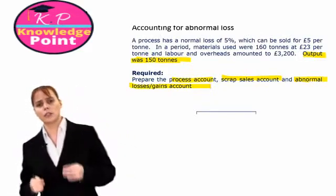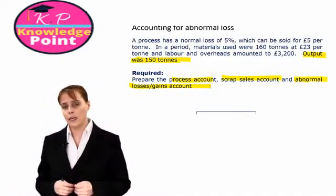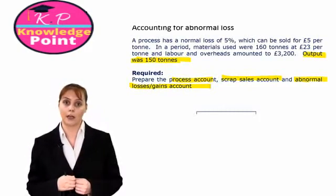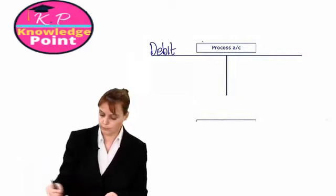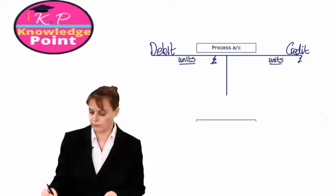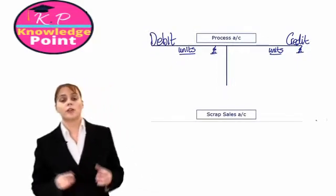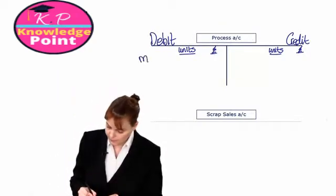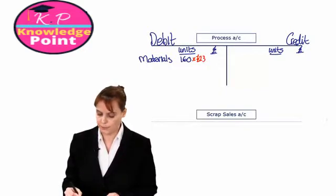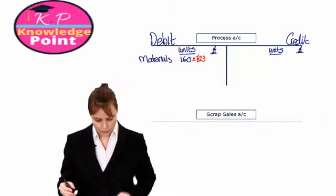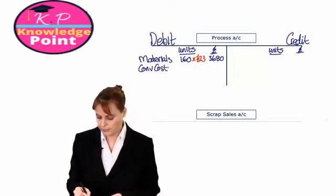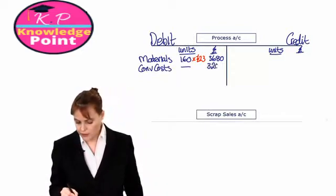We'll begin with our process account. We'll start as normal, recording our input costs on the debit side, and then we'll look at our outputs on the credit side. Our first input cost is our materials: 160 units with a cost of £23 each, so the total cost will be £3,680. Then we have our conversion costs — no unit value — total cost £3,200.